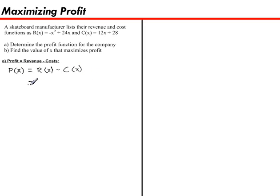So the revenue function is listed as negative x squared plus 24x, and we're going to subtract these two variables, minus 12x minus 28. Don't forget to change the sign of this last number. And to find the profit function, we just need to collect like terms.